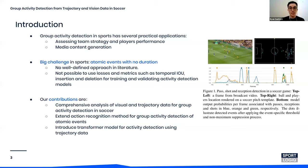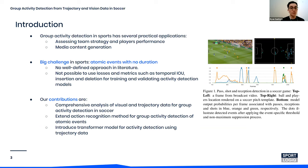Group Activity Detection in sports has several practical applications, including assessing team strategy and player performance, and also for media content generation. However, a big challenge in sports is that the actions and events tend to be atomic — they have no notion of duration and are only marked at one single moment in time. This makes it impossible to use typical losses such as the temporal IoU.